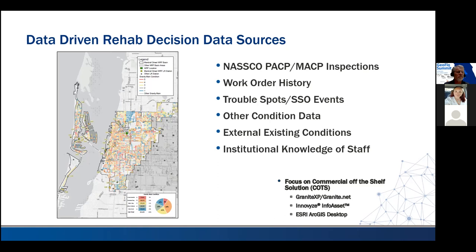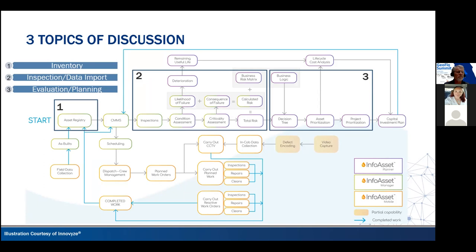Now is the time to pick their brains and get all of that institutional knowledge from that staff. This is a really good illustration of all the different components that go into an effective asset management program. You've got the asset registry — and that's where GIS is really critical. We have to tell management and decision makers how good is our GIS representation of what's actually in the ground: do our pipes snap to the nodes, is our material registry correct, are our invert elevations correct, our manhole data. That's really GIS's realm — to identify those issues and find ways to resolve them.